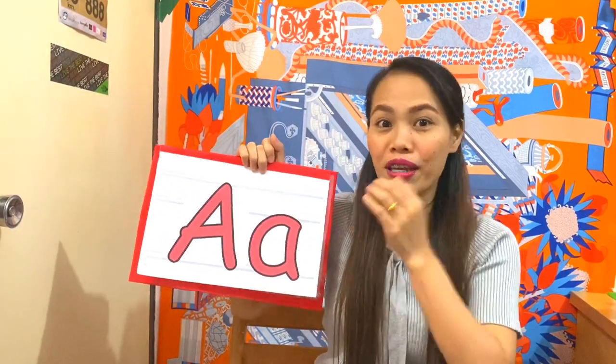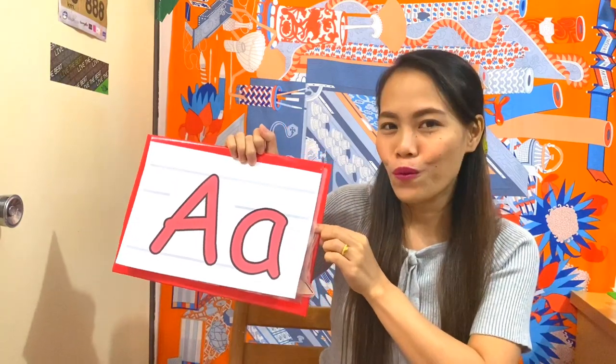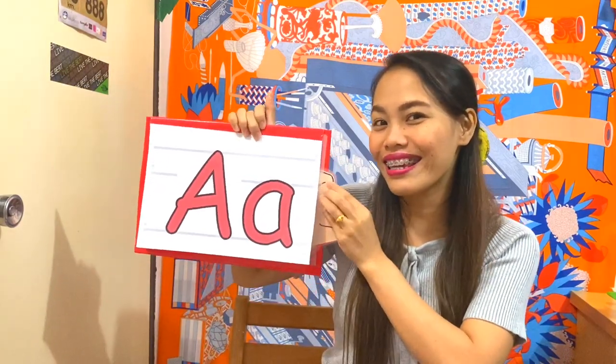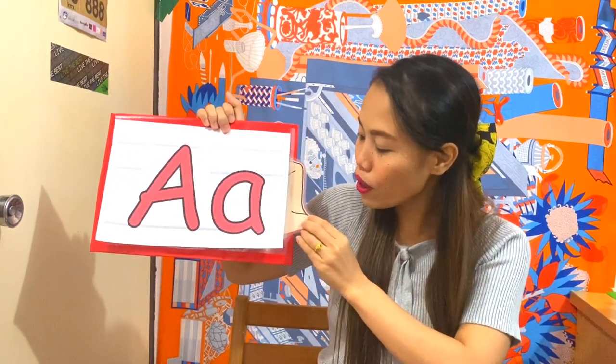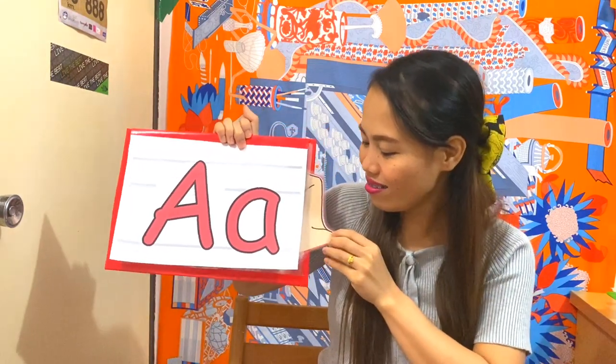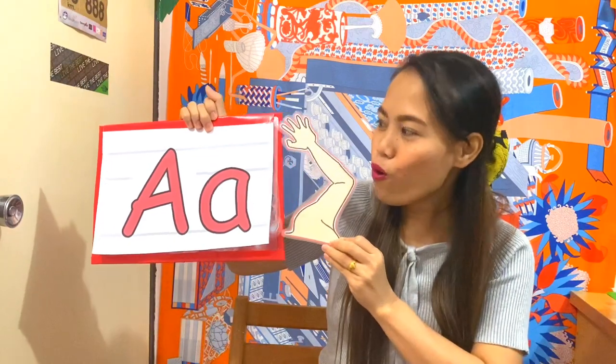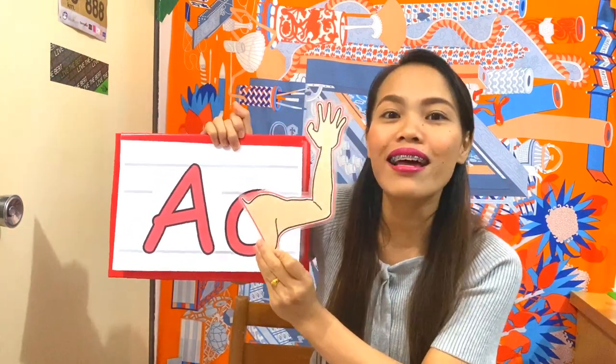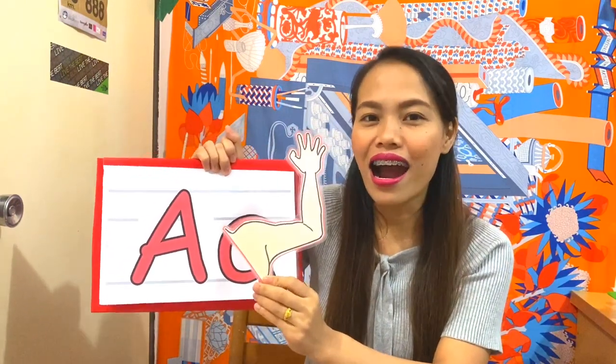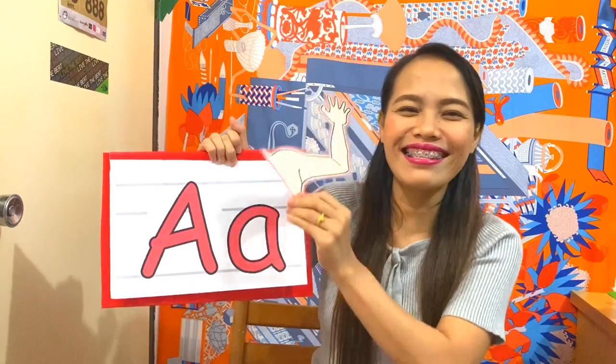Okay, next picture we have is — what is this? Everybody look here! Oh, what is this? Everybody look! Wow! It's an arm! Everybody say Arm. Say it again. Arm. Very good! A. Arm. Good job!